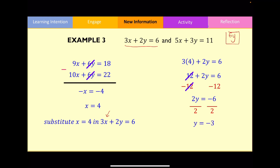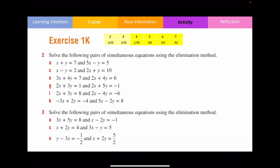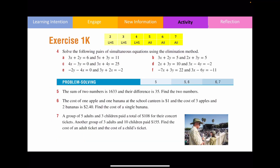Finally, we express our answer as a coordinate — x first, then y — so the answer is (4, negative 3). I'd now like you to please answer questions from Exercise 1K. This is the end of the video. Hopefully this has helped you. I'll see you again in the next one. Bye.